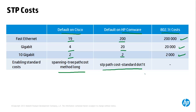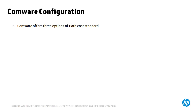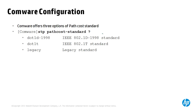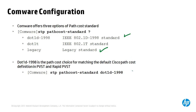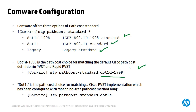On HP Comware, this can be changed to use industry standard costs with the command 'stp path-cost standard .1t'. When integrating HP Comware switches into a Cisco environment, three options can be used: legacy mode (the default on HP Comware), .1d 1998 to match the default cost of Cisco switches if the long method hasn't been configured, and .1t when Cisco switches have been configured with the long method. Check whether the Cisco switches are using the long method or the default, then configure your Comware switches to match.